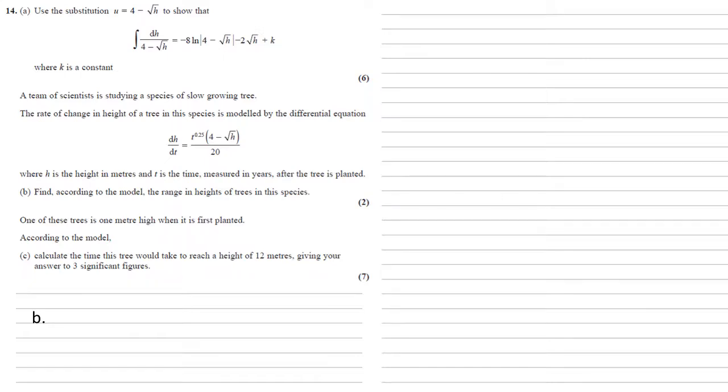A team of scientists is studying a species of slow-growing tree. The rate of change in height of a tree in this species is modelled by the differential equation dh by dt equals t to the power of 0.25 times 4 minus root h all over 20, where h is the height in metres and t is the time measured in years after the tree is planted. We need to find, according to the model, the range in heights of trees in this species. We've been given a differential, dh by dt.